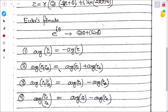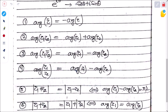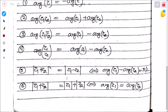Additional argument properties: arg(z̄) = −arg(z); arg(z₁·z₂) = arg(z₁) + arg(z₂); arg(z₁/z₂) = arg(z₁) − arg(z₂); arg(z₁ − z₂) = arg(z₁) − arg(z₂). Also, |z₁ + z₂| = |z₁ − z₂| and |z₁ + z₁| = |z₁| + |z₂| implies arg(z₁) = arg(z₂).